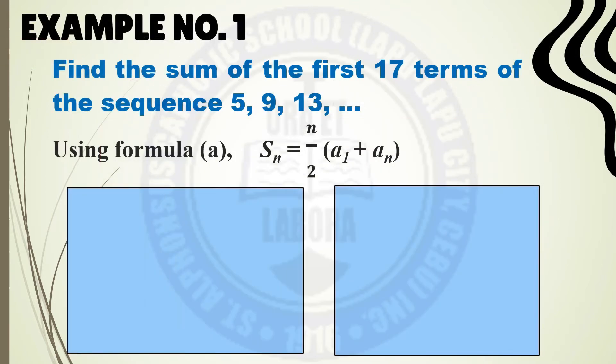Let us consider the first example. Find the sum of the first 17 terms of the sequence 5, 9, 13. Using the first formula, we have S sub n equals n over 2 times the quantity of a sub 1 plus a sub n. In this case, we need to find a sub 17 first since the total number of terms is equal to 17. Therefore, our A sub n is A sub 17, which is our last term of our sequence.